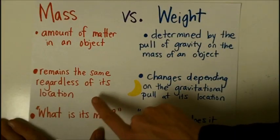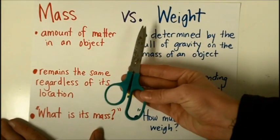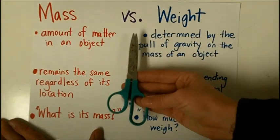The mass of an object remains the same regardless of its location. Wherever you took these scissors, they would have the exact same mass.